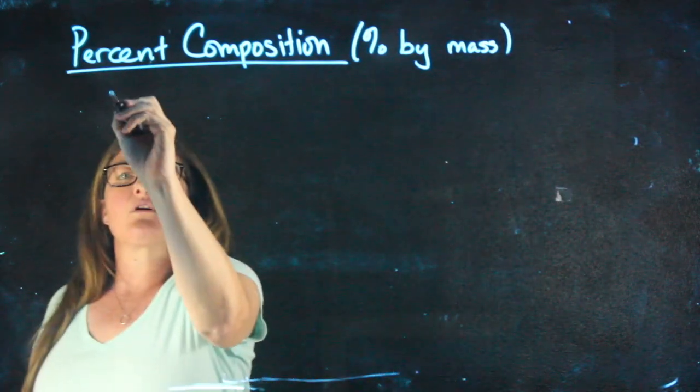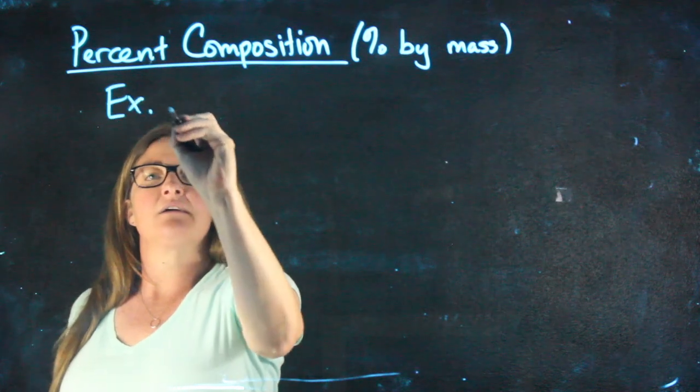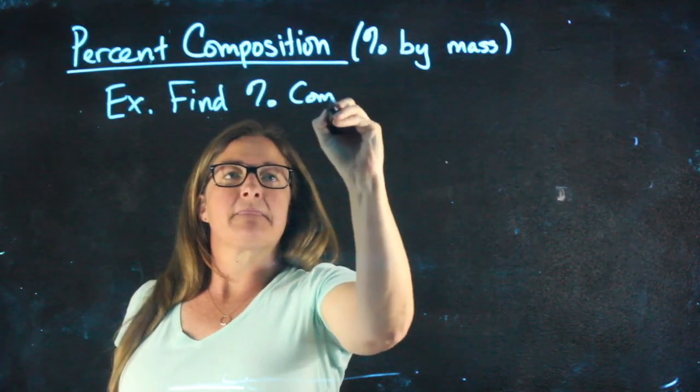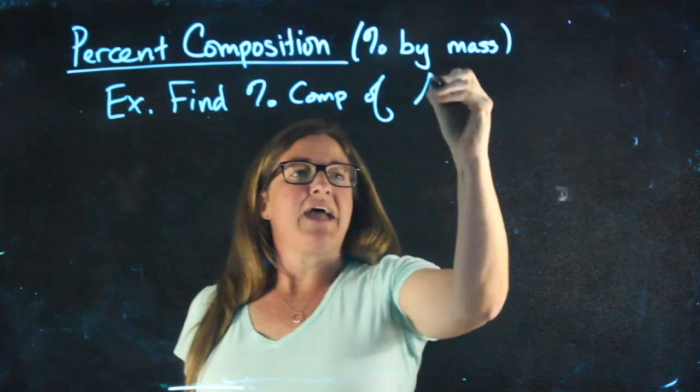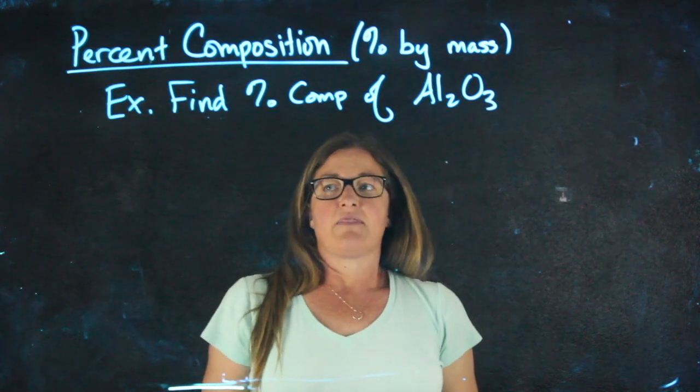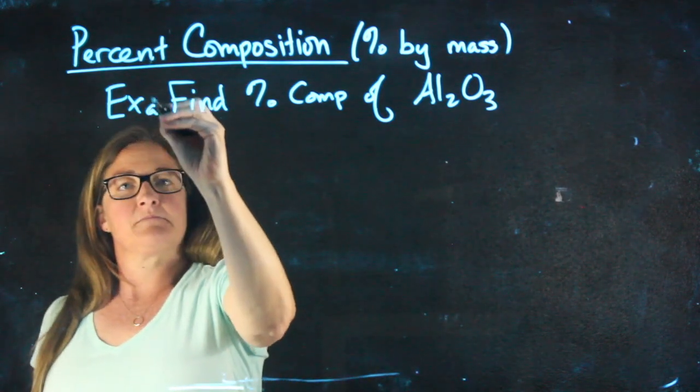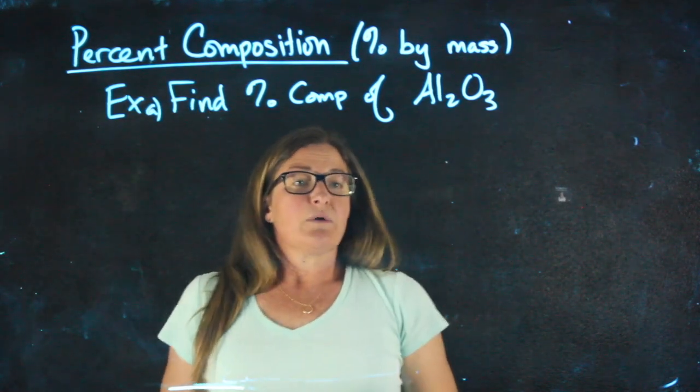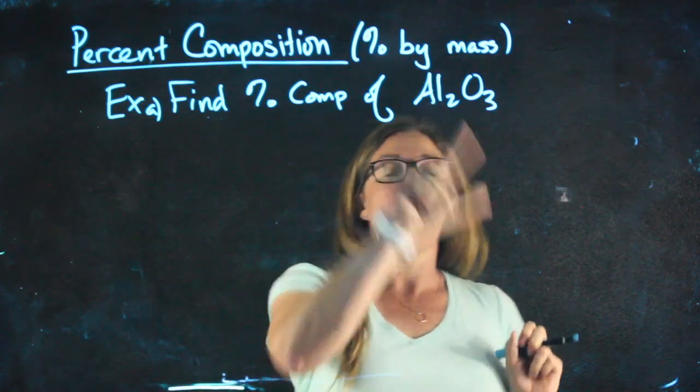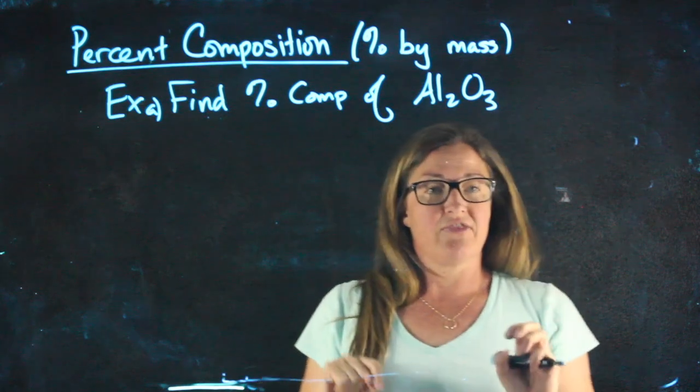So let's say we're going to find the percent composition of Al2O3. That's going to be part A. So if I were taking a look at aluminum oxide, whenever I have aluminum oxide it's always going to have two aluminums and three oxygens.